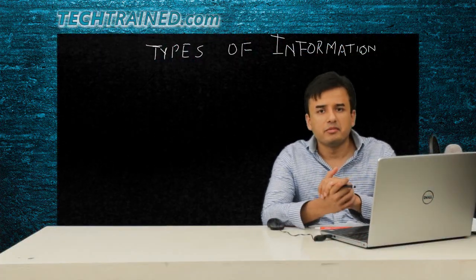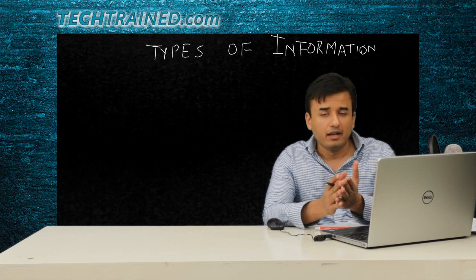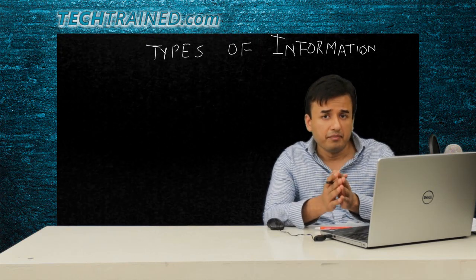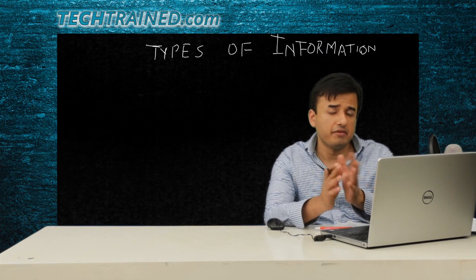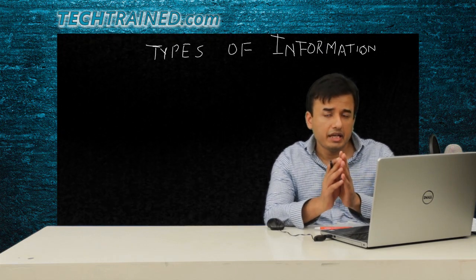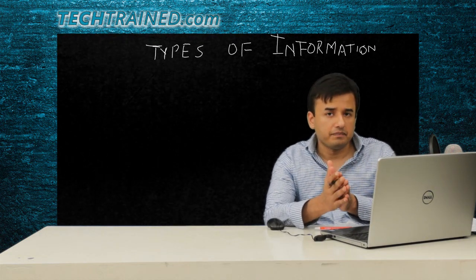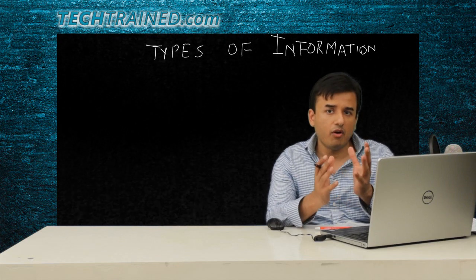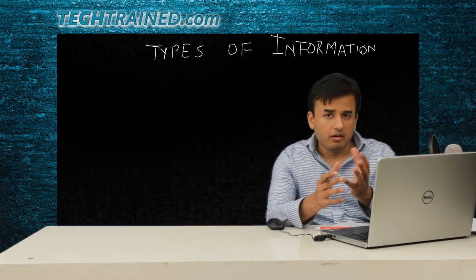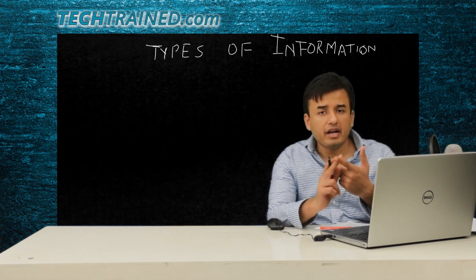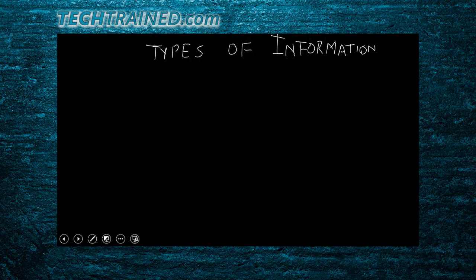Welcome. Now we are going to discuss channel mapping in the downlink. Before we draw the channel mapping diagram and define logical, transport, and physical channels, we need to understand one thing. Think about intuitively what types of information you can receive in the downlink — from the perspective of your phone, your UE. The number one thing is broadcast information.